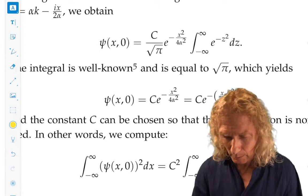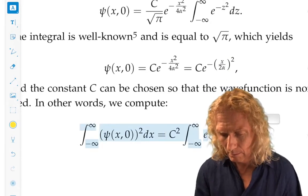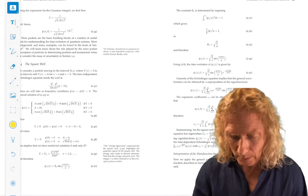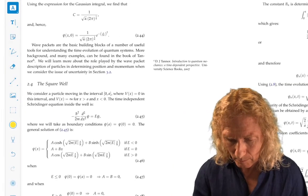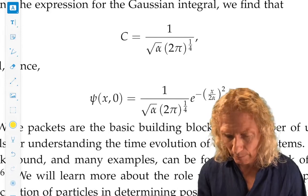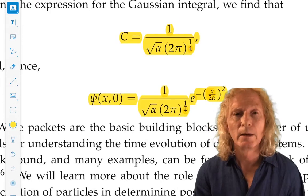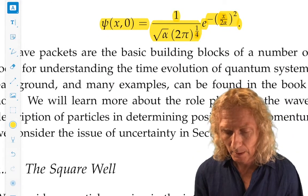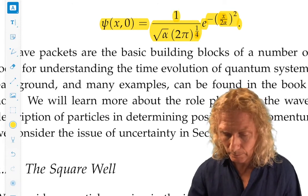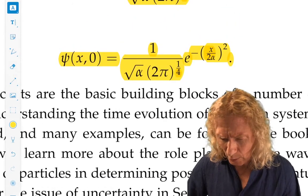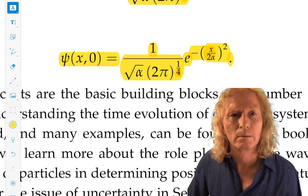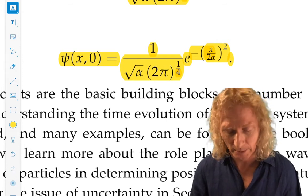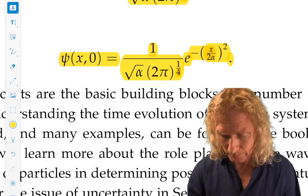So then, we have this expression. We look at the normalization condition. We do the integral. And we end up with the value for the constant and the normalized wave function for the Gaussian wave packet. And we see that it has a single parameter now, alpha. And that allows us to play with the shape of the wave packet, respecting normalization. Play with the width, effectively.